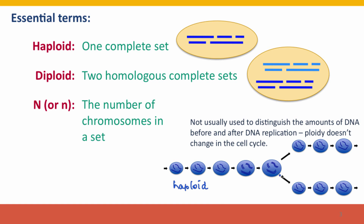At this point the cell has replicated its DNA, but it's still a haploid cell — because these aren't homologous chromosomes, they're identical copies. And when the cell divides, the daughter cells are still haploid.